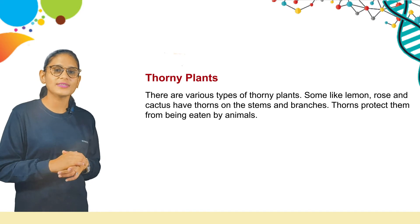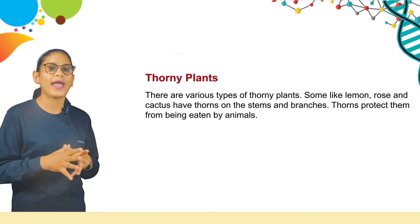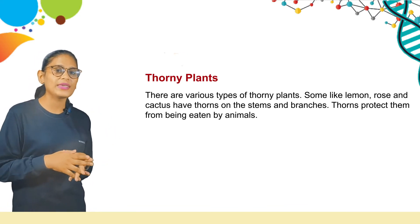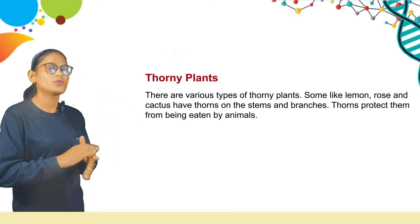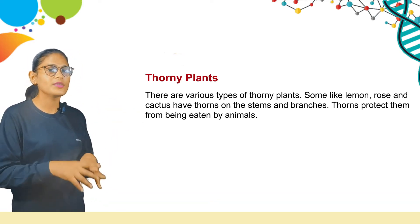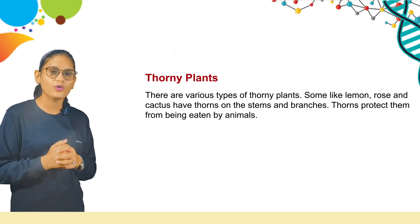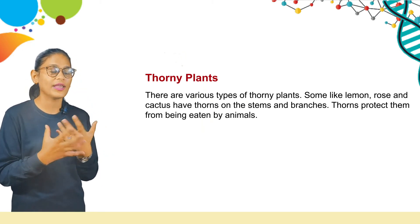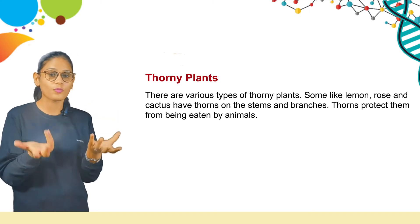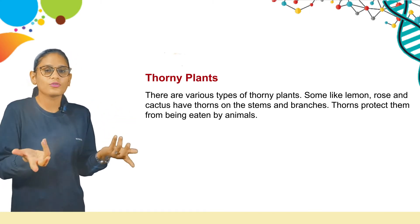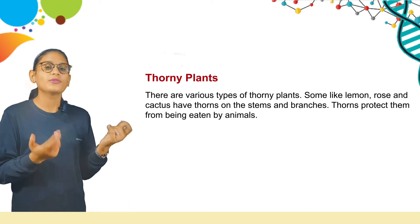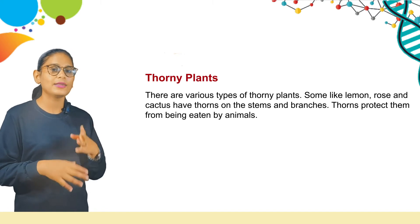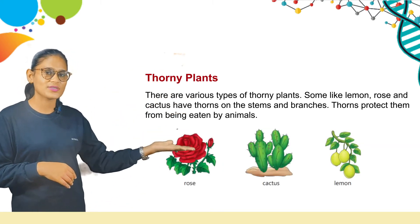Here are thorny plants. There are various types of thorny plants. Some, like lemon, rose, and cactus, have thorns on their stems and branches. Thorns protect them from being eaten by animals. Here are some pictures: rose plant, cactus, and lemon.